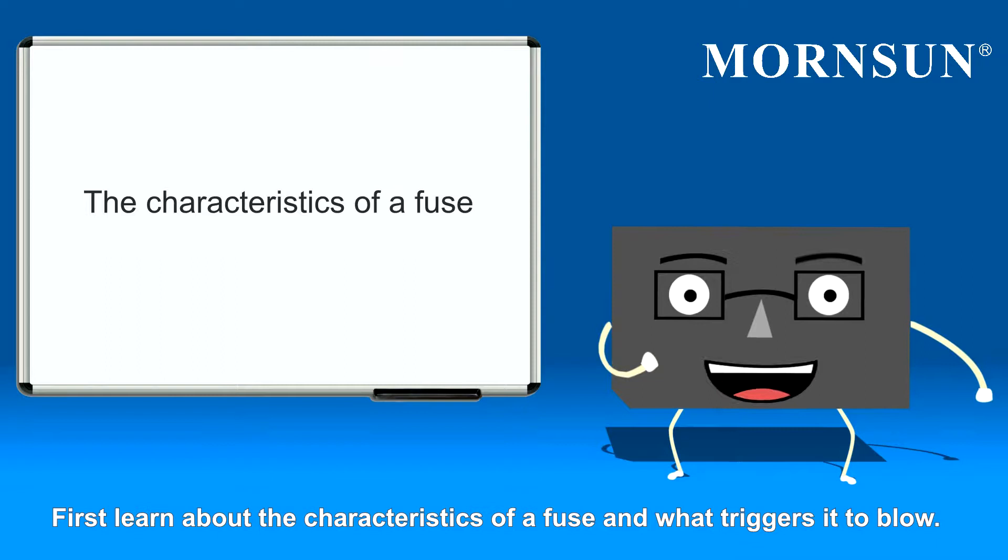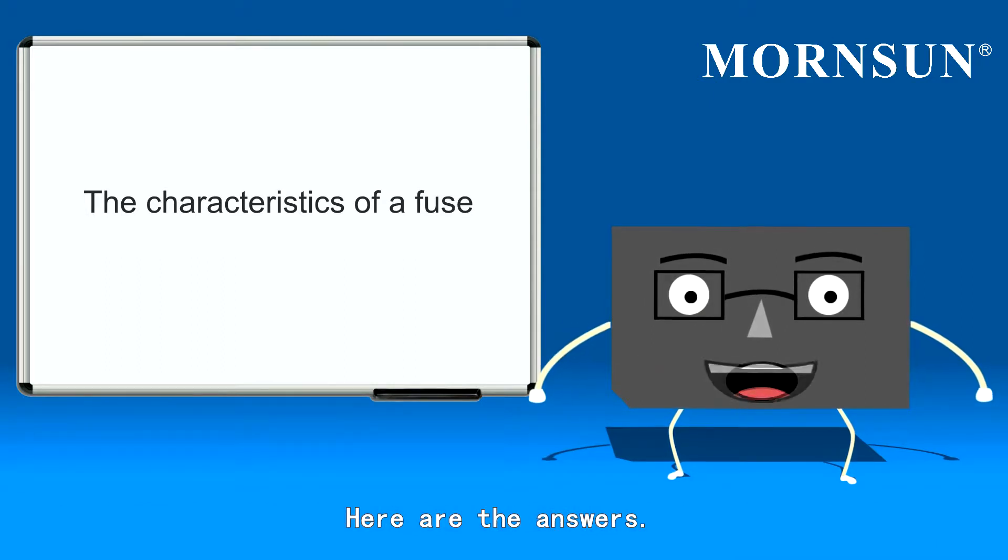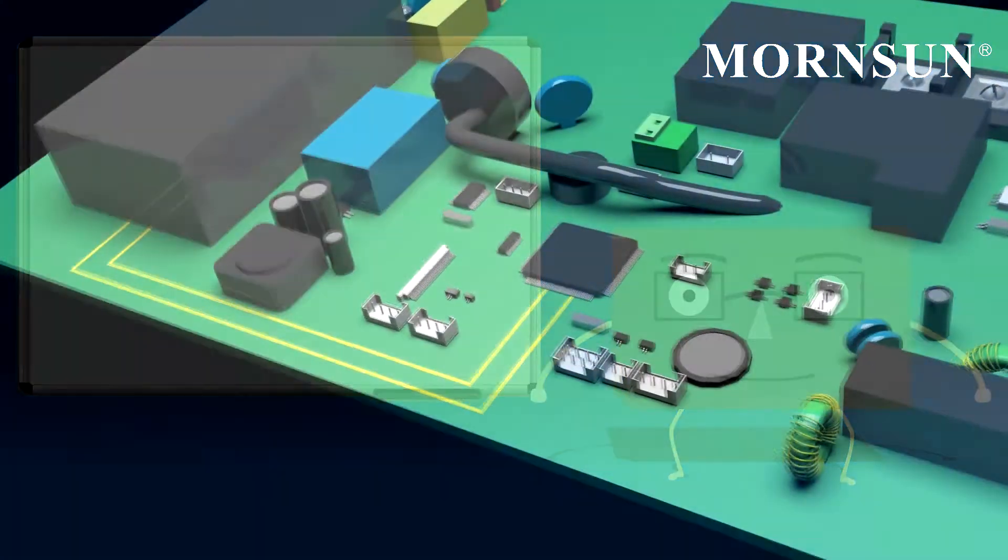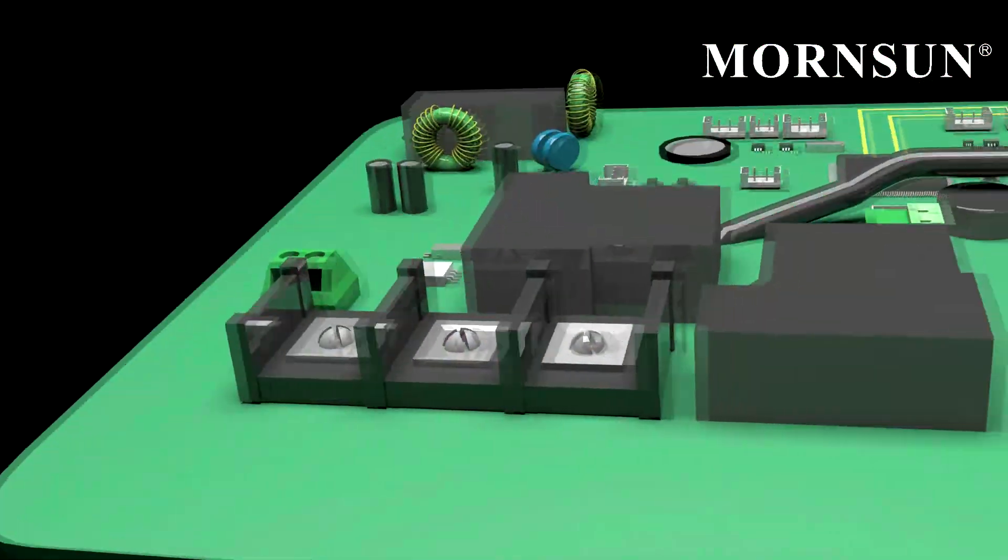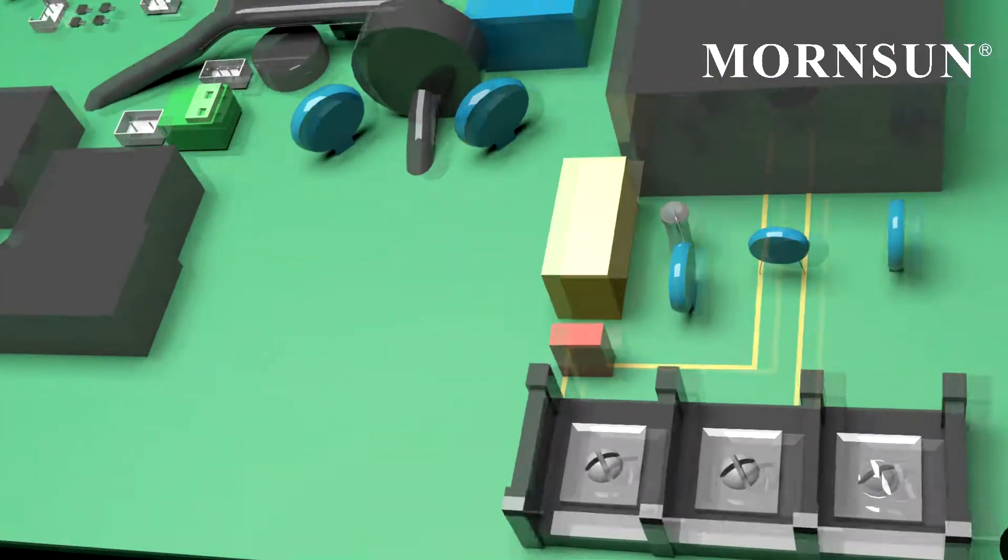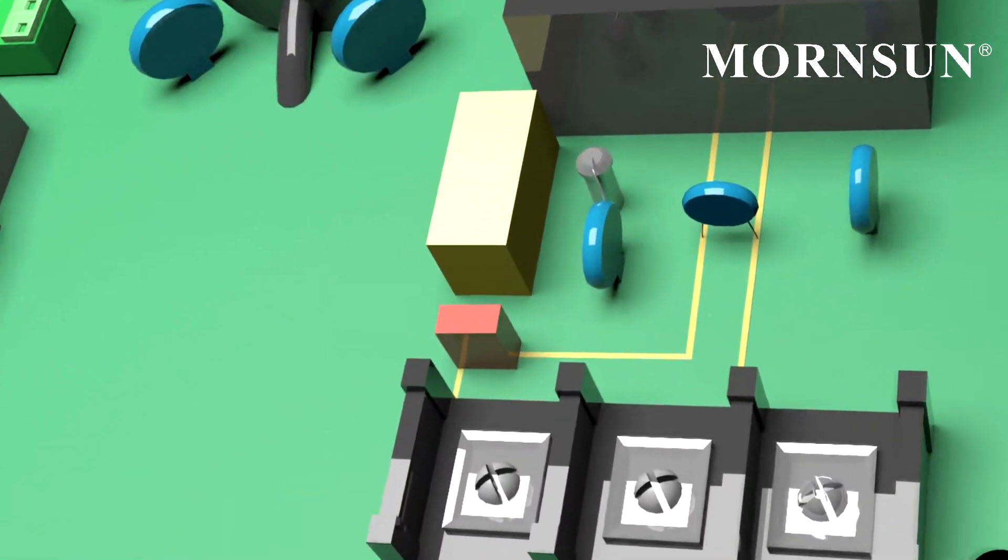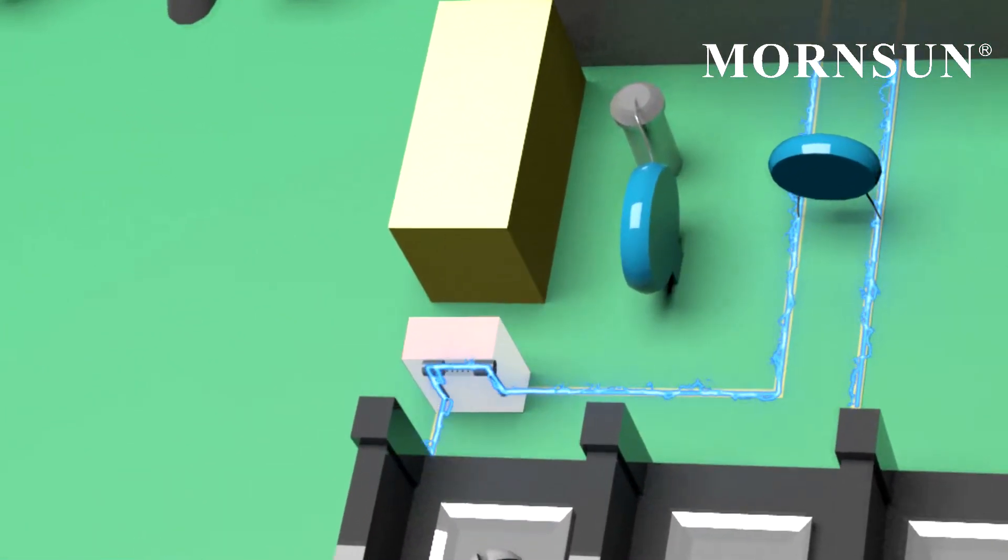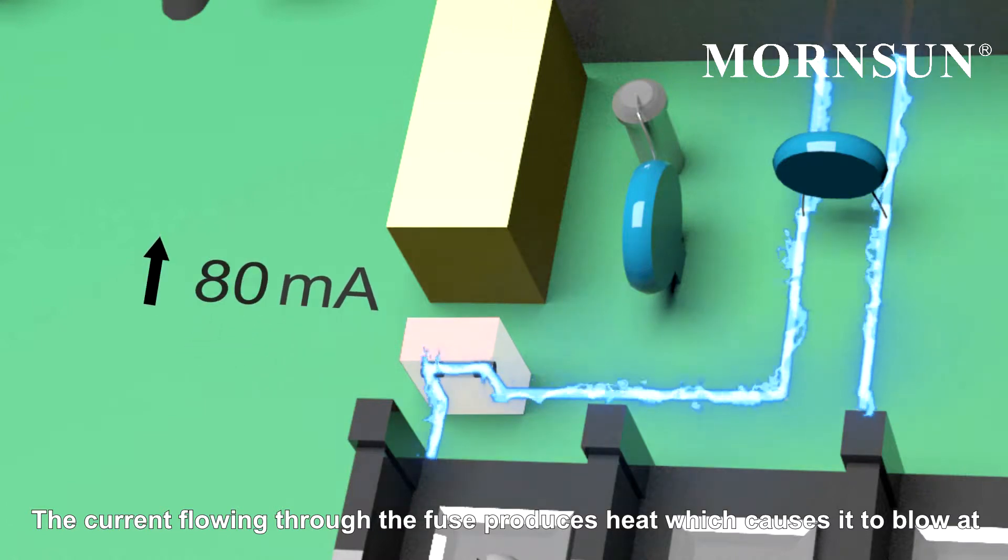First let's learn about the characteristics of a fuse and what triggers it to blow. Here are the answers. The current flowing through the fuse produces heat which causes it to blow at a certain point.